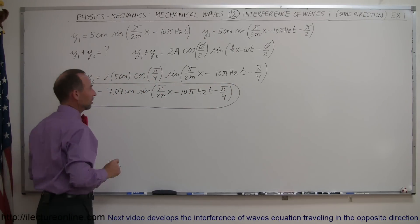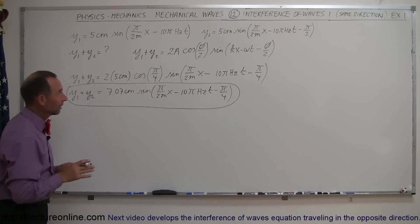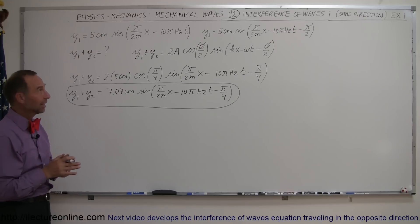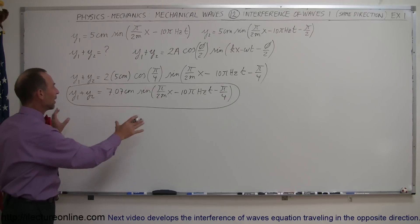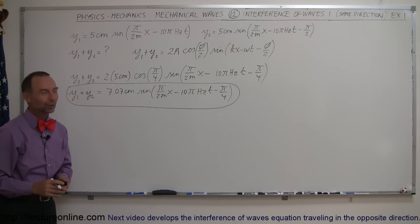Again, the conditions are: they're both traveling to the right, they're both traveling with the same velocity, they have the same amplitude, same wavelength, and same frequency, but shifted by pi over 2. When you combine the two waves, that's the result. That's how you do that.